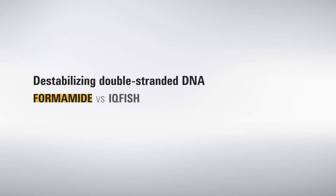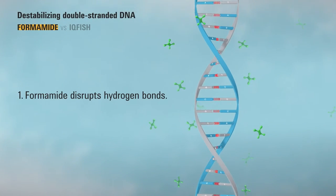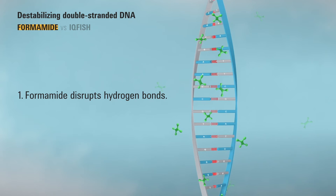Traditional fish uses formamide to destabilize double-stranded DNA. Formamide disrupts hydrogen bonds, which causes the two strands to separate.